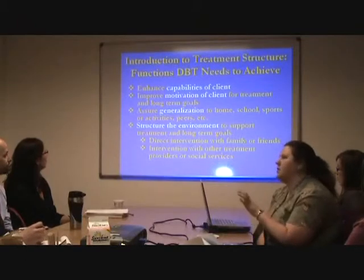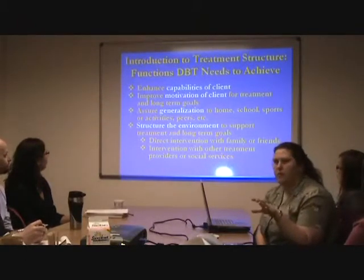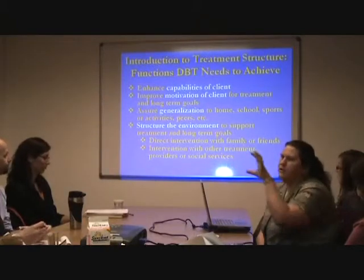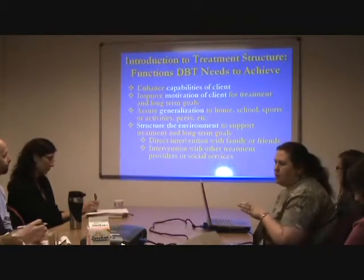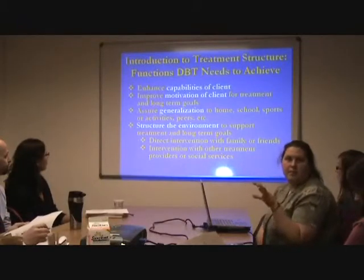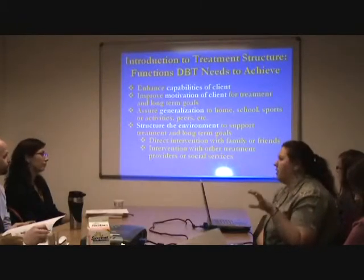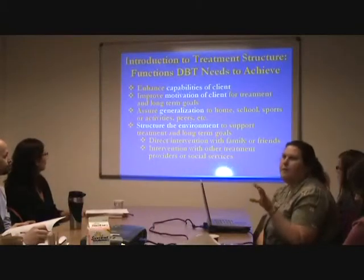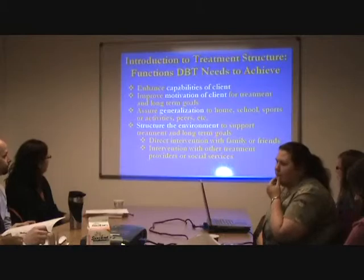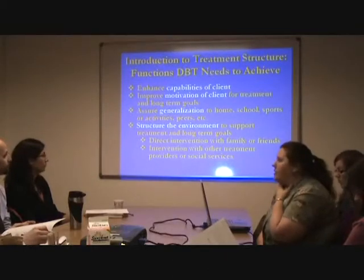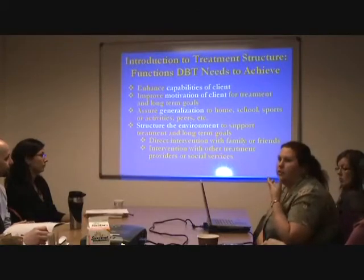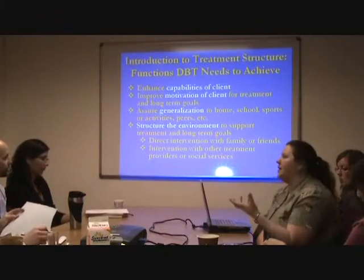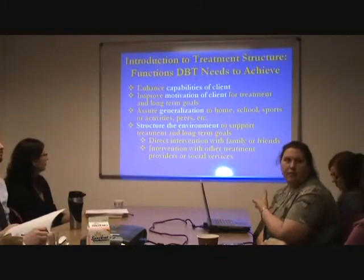Then there are two functions where you treat the patient by treating somebody else. One is called structuring the environment — you structure the environment surrounding the patient so that they will be motivated for treatment and long-term goals. This includes direct intervention with family and friends, which is much more of an issue for young adult, adolescent, and child populations, as well as interventions with other treatment providers or social services. Also critically important is managing your own facility to ensure your facility's rules, structures, and guidelines don't actually support the illness rather than the treatment.